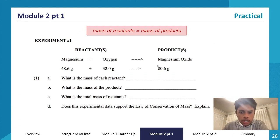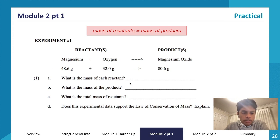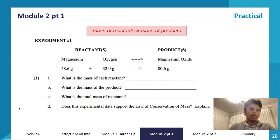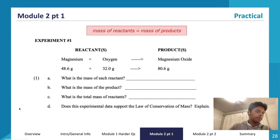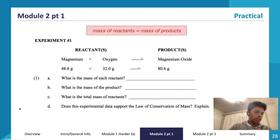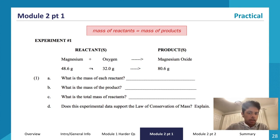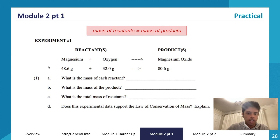The heading here is: mass of reactants has to equal mass of products. What is the mass of each reactant for magnesium? If I pull up my periodic table, the mass of magnesium is 24.31, and the mass of oxygen is 16.00. So we have 24.31 and 16.00 as the mass of each reactant.